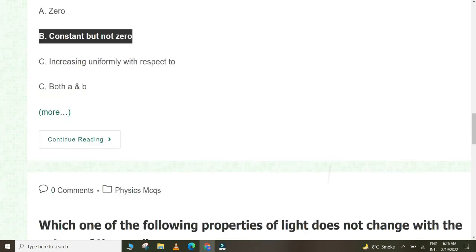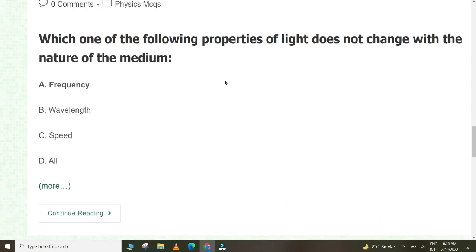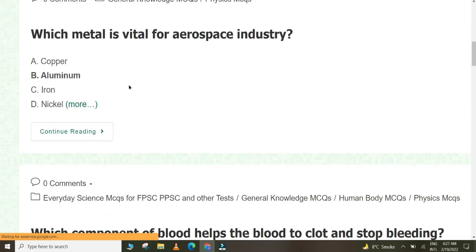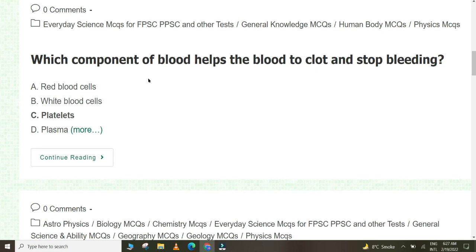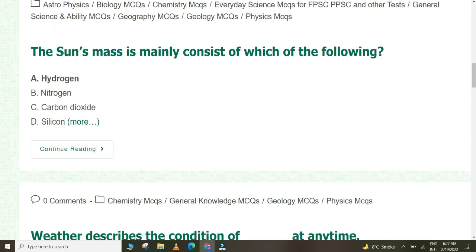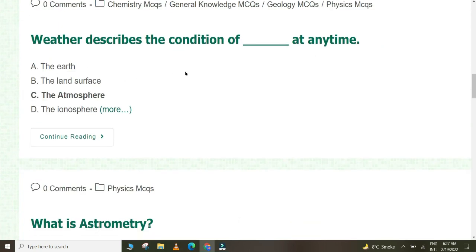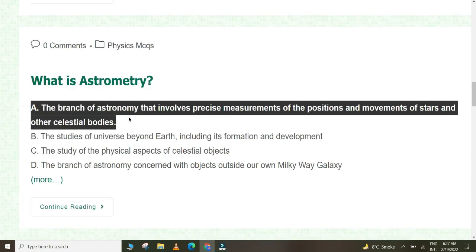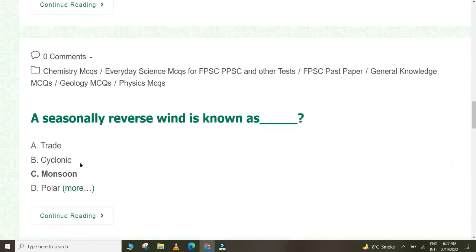A mass accelerates uniformly when resulting force acting on it is constant but not zero. Which of the following properties of light does not change with the nature of the medium? Frequency. A moving body needs to have potential energy. Which metal is vital for aerospace industry? Aluminum. Which component of blood helps the blood to clot and stop bleeding? Platelets. The sun's mass is mainly consists of hydrogen. Weather describes the condition of the atmosphere at any time. What is astrometry? The branch of astronomy that involves precise measurements of positions and movements of stars and other celestial bodies.